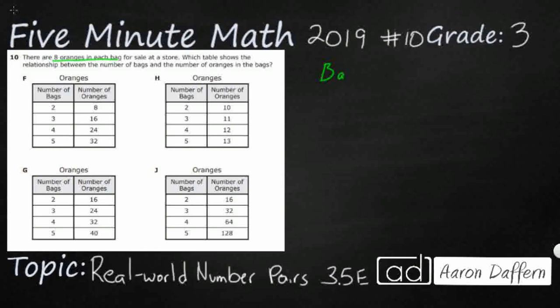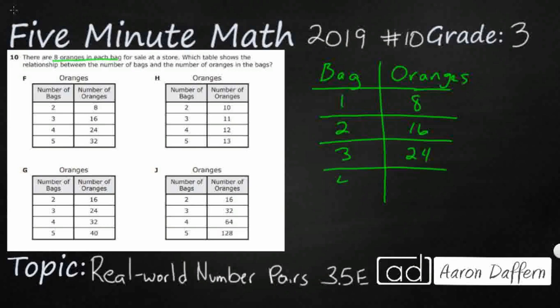So we've got bag and then we've got oranges. And so if we've got one bag, we're going to have eight oranges. And eventually we are going to go ahead and look at our answer selections F, G, H, and J. But it's always good to go ahead and make your own table just to make sure you really understand what's going on.